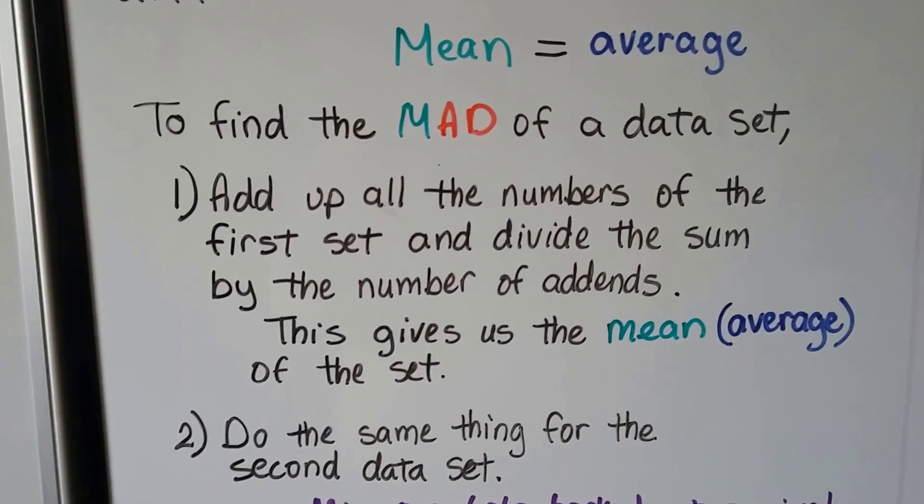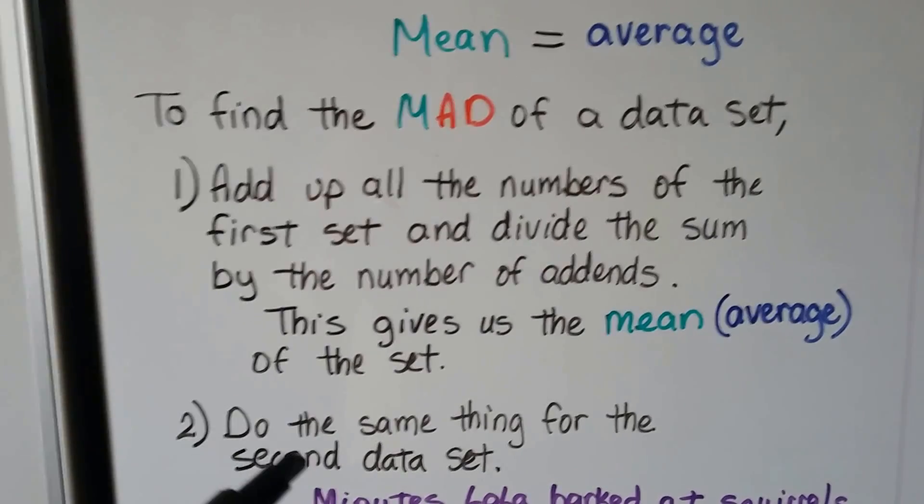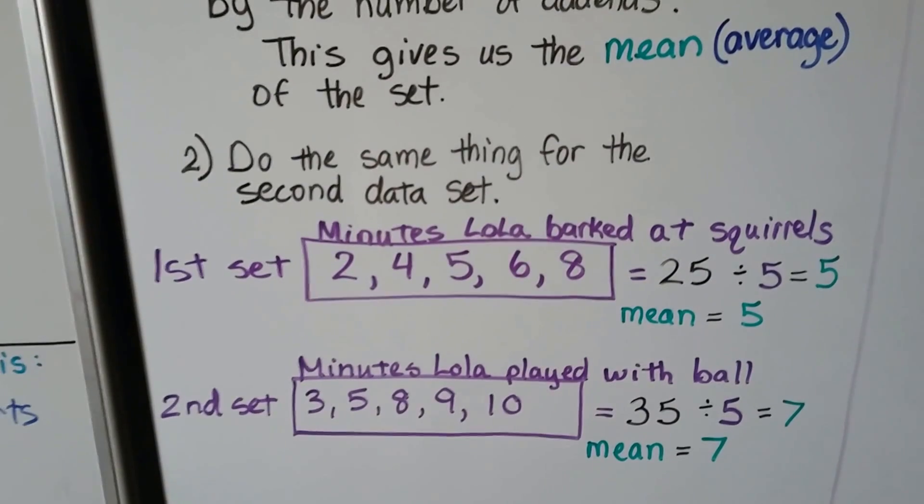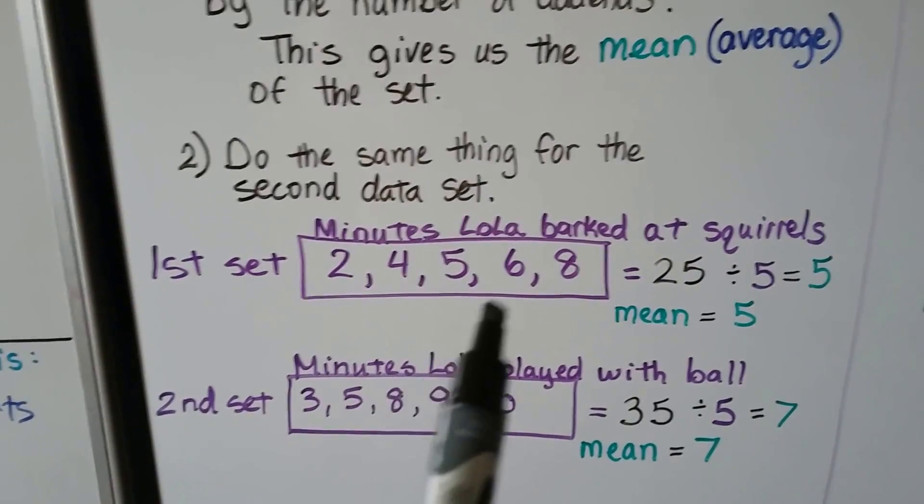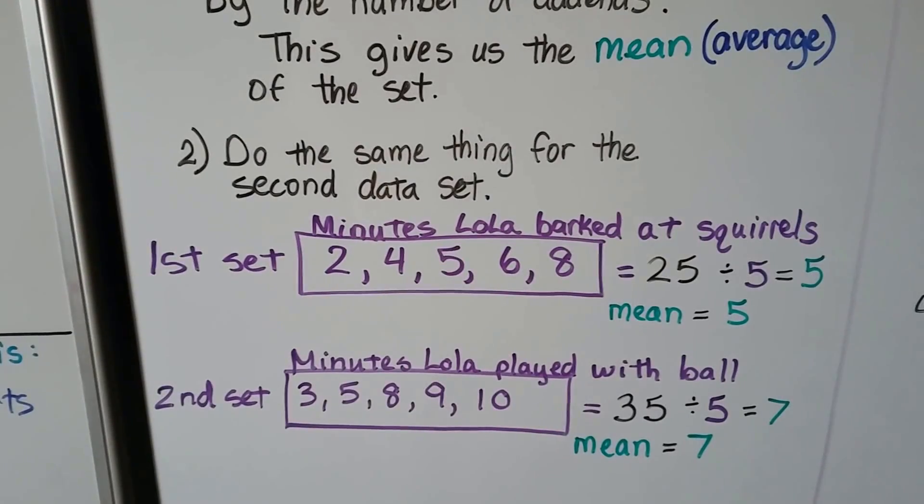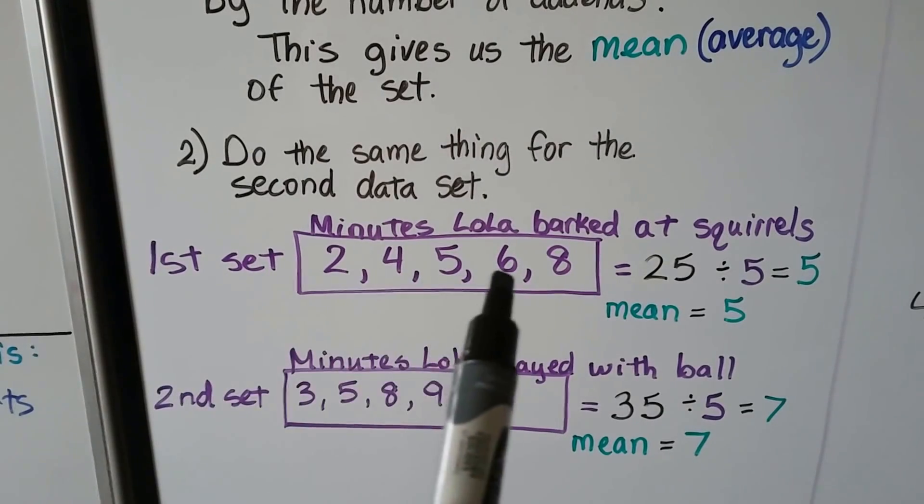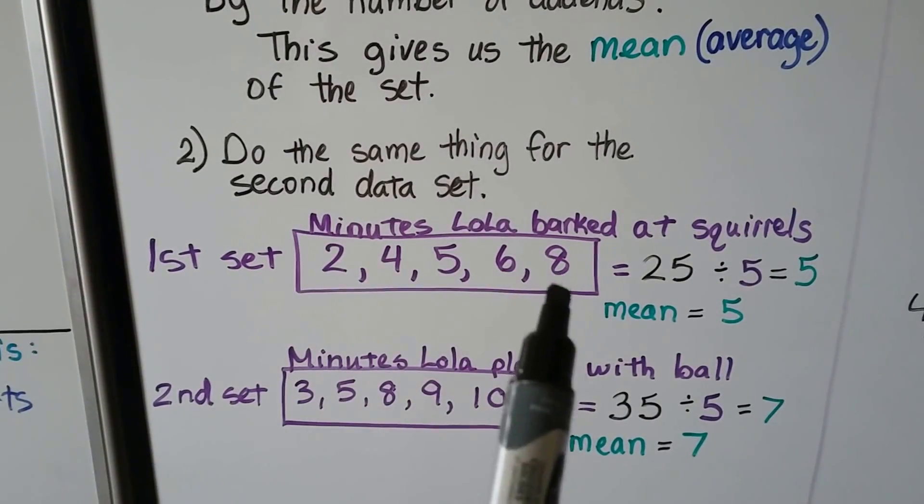We do the same thing for the second data set. We add up all the numbers and divide it by the number of addends. So my dog Lola barked at squirrels for 2 minutes, 4 minutes, 5 minutes, 6 minutes, and 8 minutes.